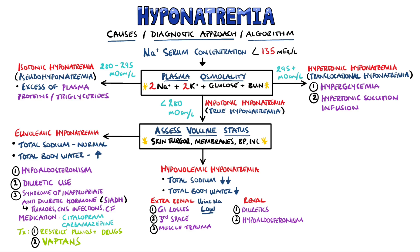The renal and extrarenal categories can be distinguished by looking at the urinary concentration of sodium. If it is low, then the kidney is functional and able to reabsorb sodium, whereas if we see a higher sodium concentration, then that tells us the kidney is not able to reabsorb the sodium properly. Treatment includes giving isotonic saline and stopping diuretics.